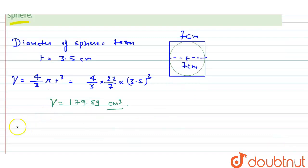The volume of sphere is here. We can say the volume of sphere is 179.59 centimeter cube. I hope you understood it. Thank you.